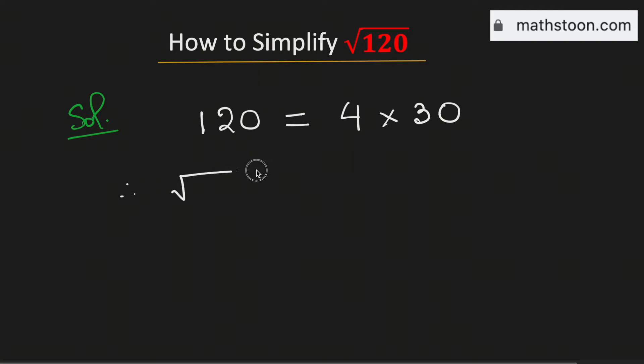Therefore, square root of 120 is equal to square root of 4 times 30.